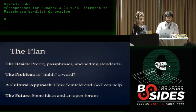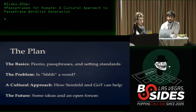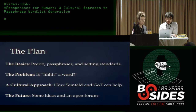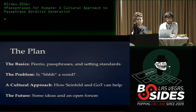To give you a brief overview: the beginning will cover some basics, we'll introduce Perio passphrases and some of the standards we arrived at, move toward the problem with existing Diceware dictionaries, discuss a more cultural approach to how we can develop these wordlists, then move to the future — reviewing current research and some ideas we're already working on — and then we'd love to hear from the audience about their experiences or ideas.